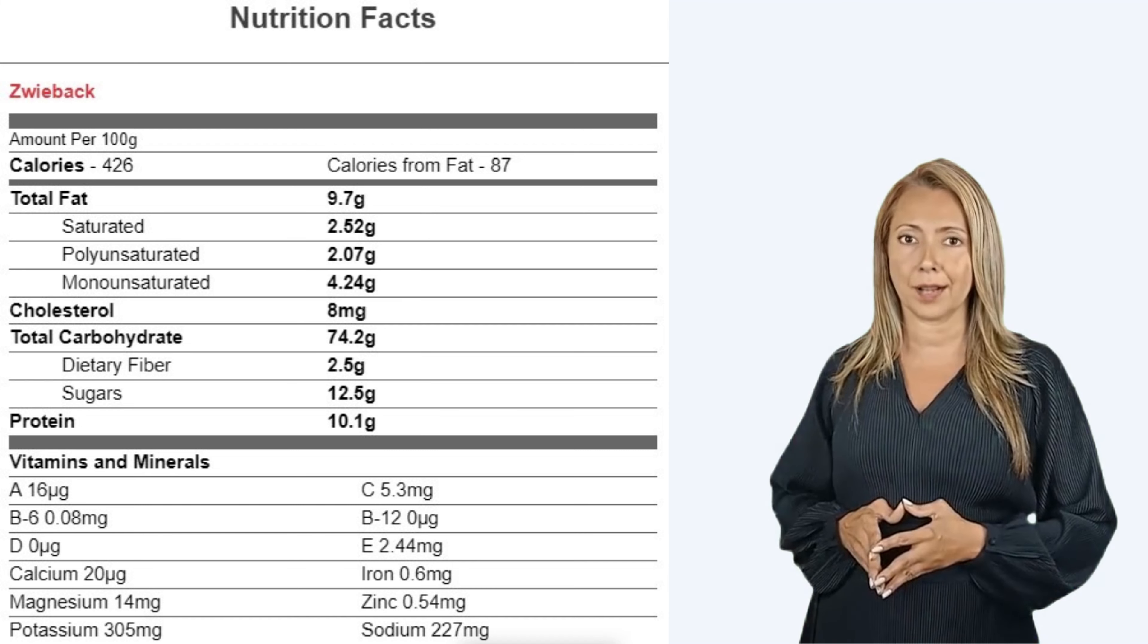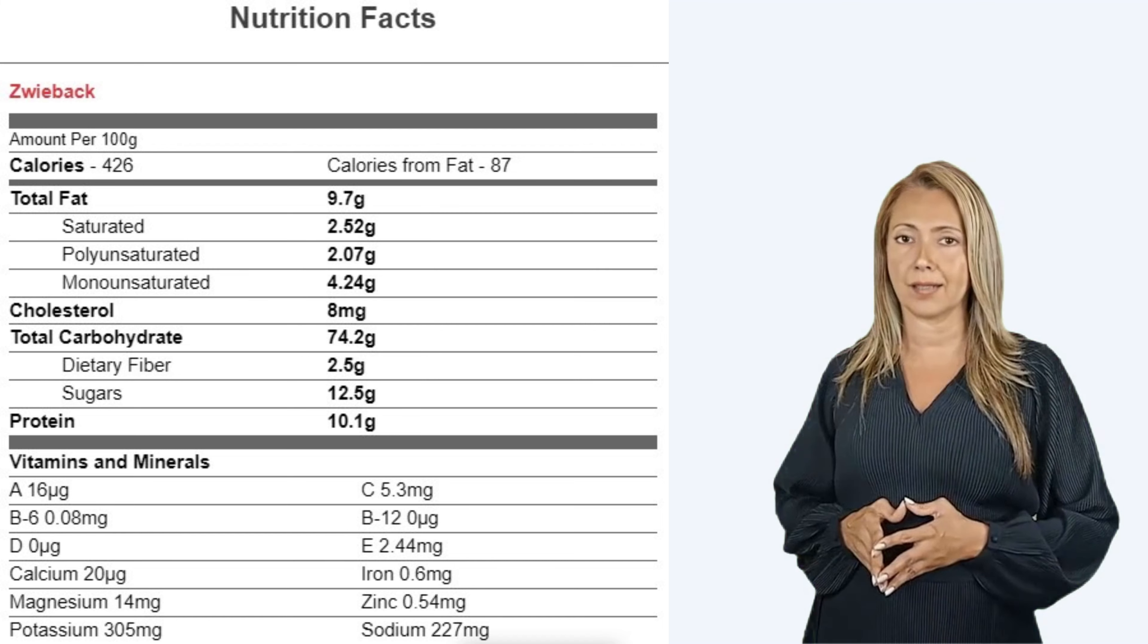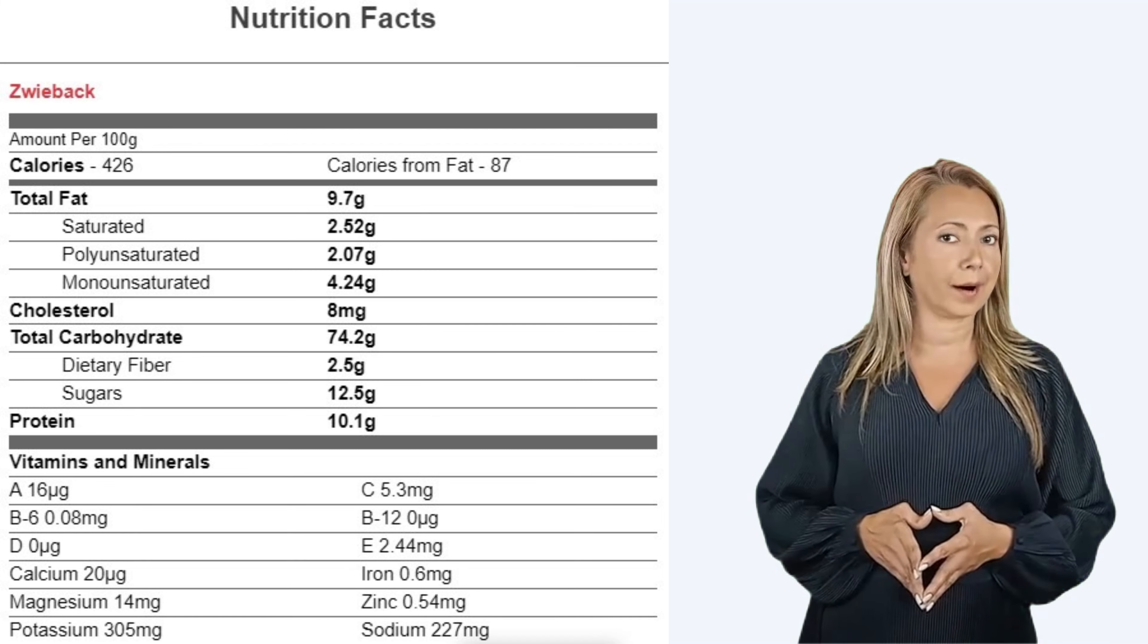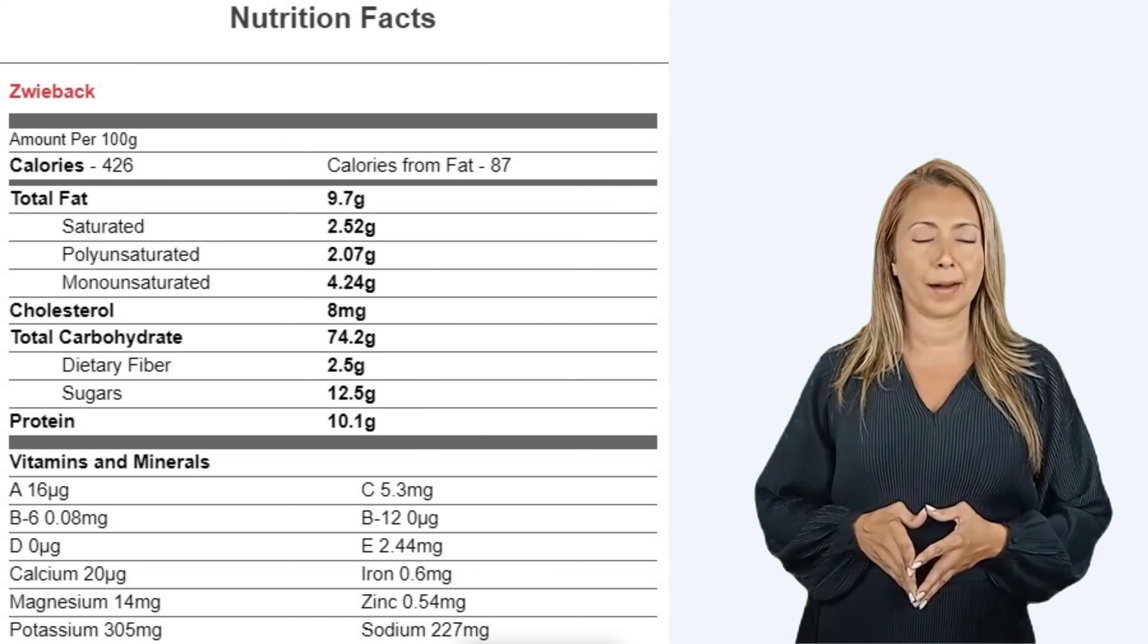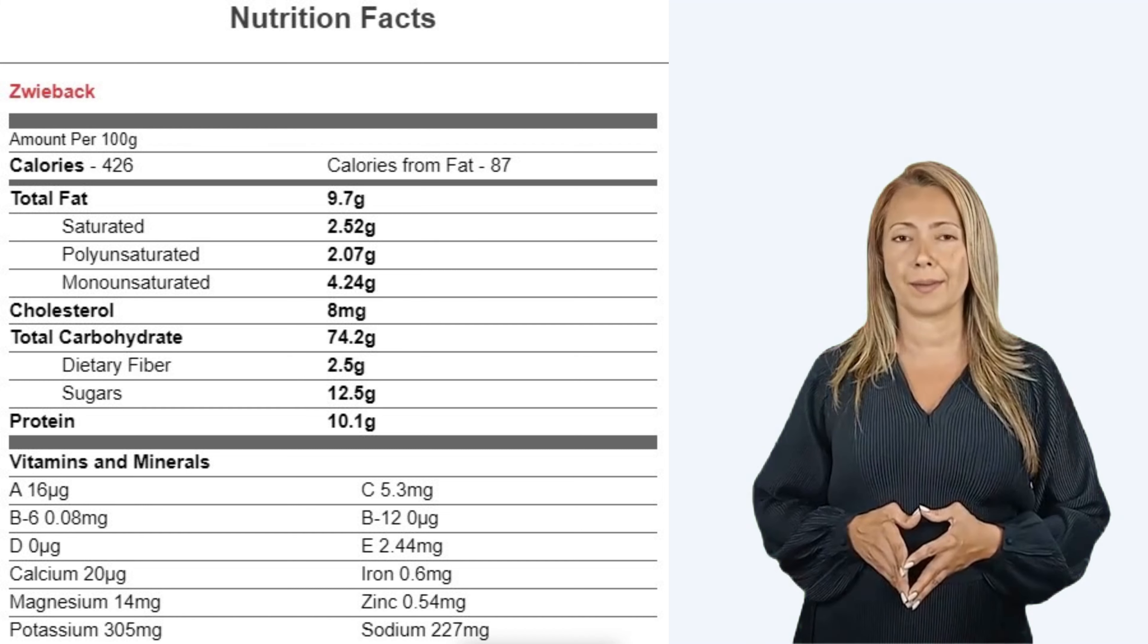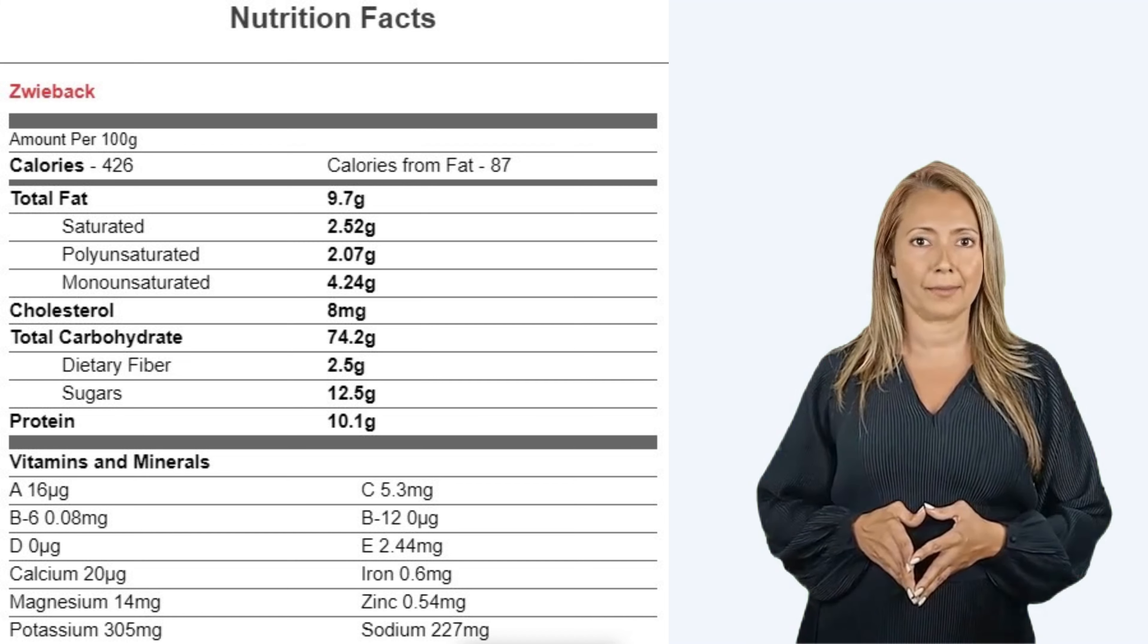Protein 10.1 grams. Vitamins and Minerals: A 16 grams, C 5.3 milligrams, B6 0.08 milligrams, B12 0 grams, D 0 grams, E 2.44 milligrams, Calcium 20 grams, Iron 0.6 milligrams, Magnesium 14 milligrams, Zinc 0.54 milligrams.